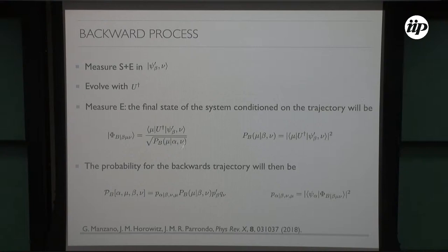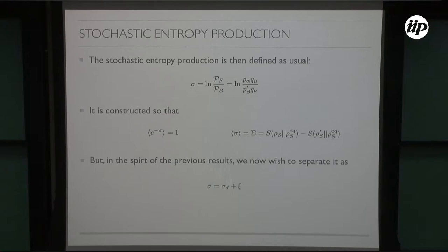This is all rather standard except for a detail related to where do you start the final states. In the backward protocol, how do you define the initial state of the backward protocol? This is discussed in this paper, but we took one of the definitions there. From this you get the entropy production.